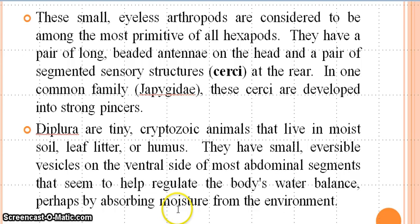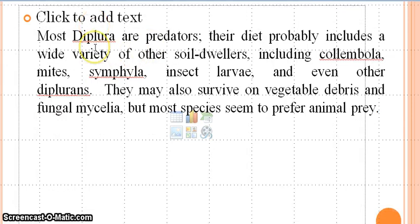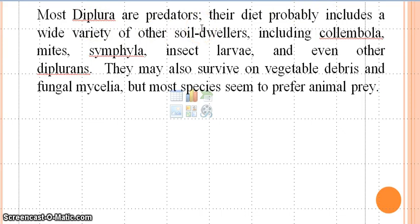They have small reversible vesicles on the ventral side of most abdominal segments that help them regulate water balance, perhaps by absorbing moisture from the environment. Most Diplura are predators; their diet probably includes a wide variety of other soil dwellers, including Collembola. They prey upon Collembola, mites, fly insect larvae, and even other diplurans — they may even prey upon other members of the same group. They may also survive on vegetable debris and fungal mycelium, but most species seem to prefer animal prey.